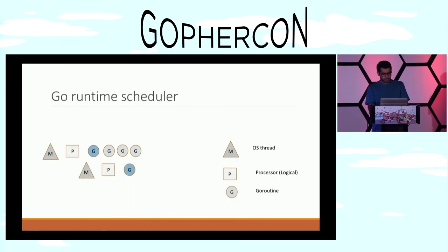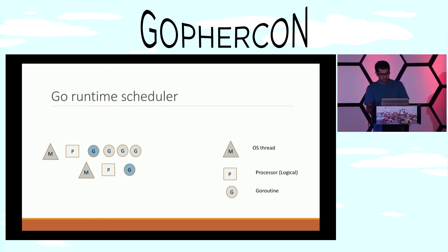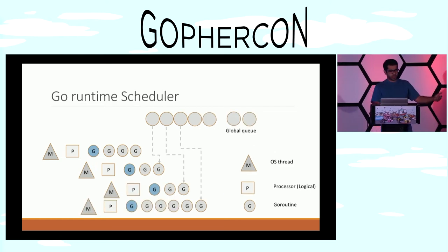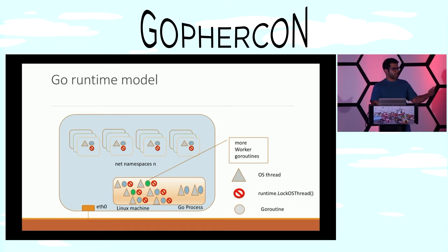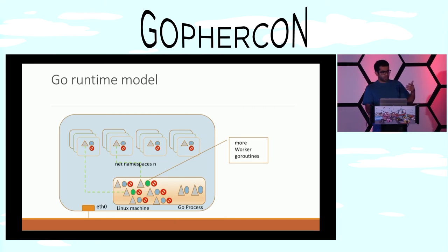Now let's see why this happened. As we saw in Kavya's talk on Tuesday, when a goroutine is being created it gets associated with a thread, and a thread runs that goroutine. As more and more goroutines are created, the Go runtime scheduler adds them on multiple threads, and if we keep adding more goroutines, the runtime scheduler will create more and more threads. As these new threads are being created, they inherit state from an existing thread. In our case, when these goroutines reported an error, the threads on which they were running were actually inheriting state from the threads which were running in the new network namespace — and that's why some goroutines were only able to see loopback zero instead of the host network interfaces.